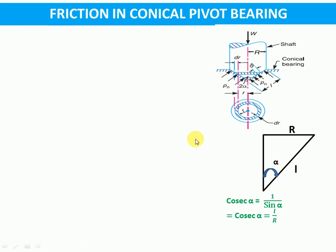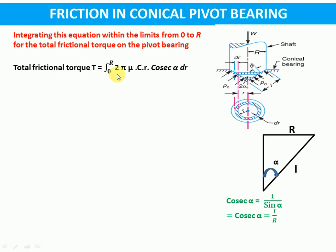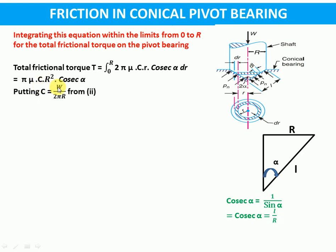Now for the total frictional torque, we integrate the equation within the limits from 0 to R. Total frictional torque will be the integral from 0 to R of 2π·mu·c·r·cosecant alpha·dr. Here 2, pi, mu, c, and cosecant alpha are all constant. So integration of r·dr gives r² by 2, and the 2 cancels, giving total frictional torque as pi·mu·c·R²·cosecant alpha. Substituting the value of c as W upon 2πR from equation 2, we get the total frictional torque for conical pivot bearing considering uniform wear.